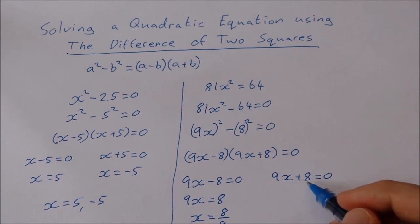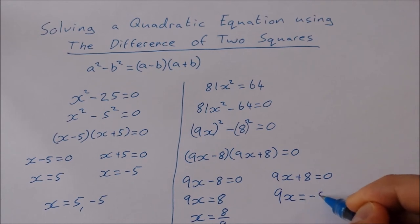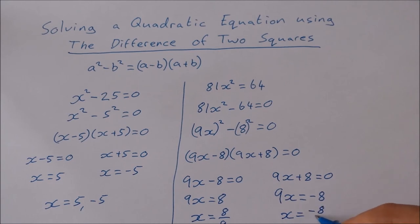Over here, subtract 8 from both sides, 9x equals minus 8. And divide both sides by 9, you get x equals minus 8 over 9.